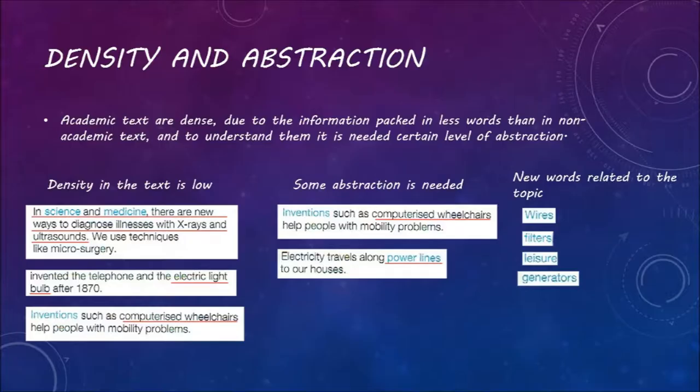About density and abstraction, we could say that most of the academic texts are dense because they have more information packed in less words than a non-academic text. So you need a higher level of abstraction to understand them.